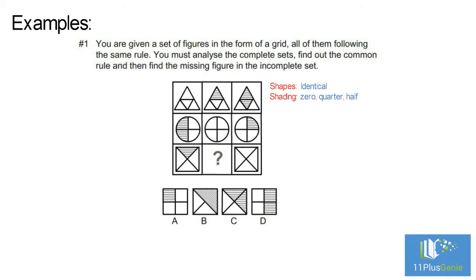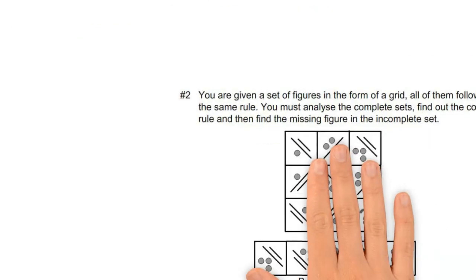Row two shapes: identical shapes, shading — one shape has no shading, one shape has a quarter of it shaded, and the third shape has half of it shaded. The same rule must be applied to row three. The missing shape must look exactly like the other two, with half of it shaded. The correct answer is C.